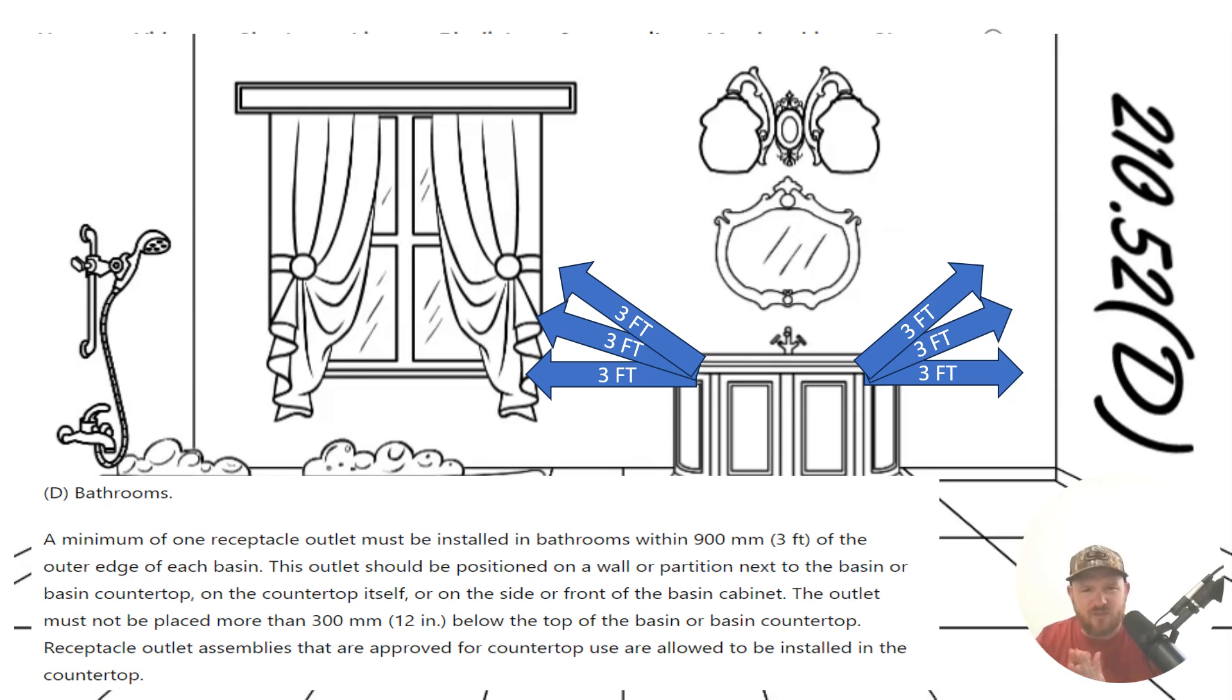We are allowed to strategically place one outlet to satisfy the three feet for both basins. That's okay, because here it says three feet of the outer edge of each basin. So it doesn't say we have to have one outlet per, but it says that we must have an outlet within three feet of each basin. And this is to keep people, like we learned yesterday, from running extension cords, especially in bathrooms.